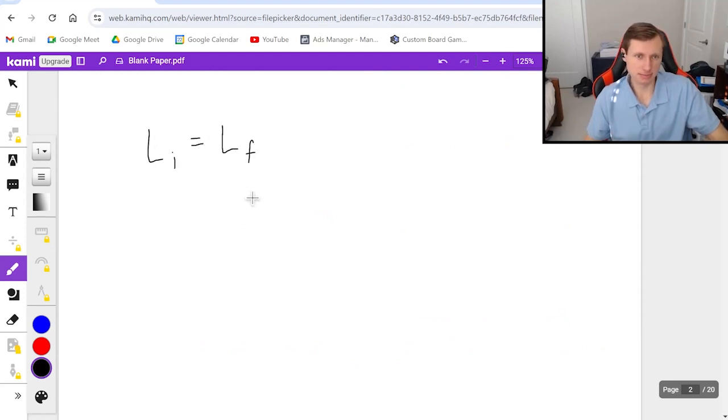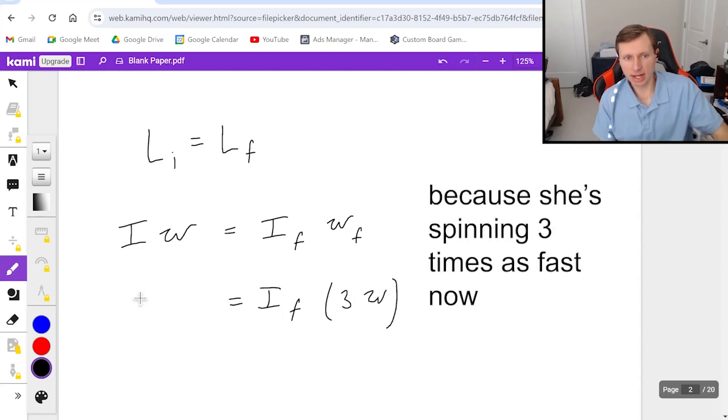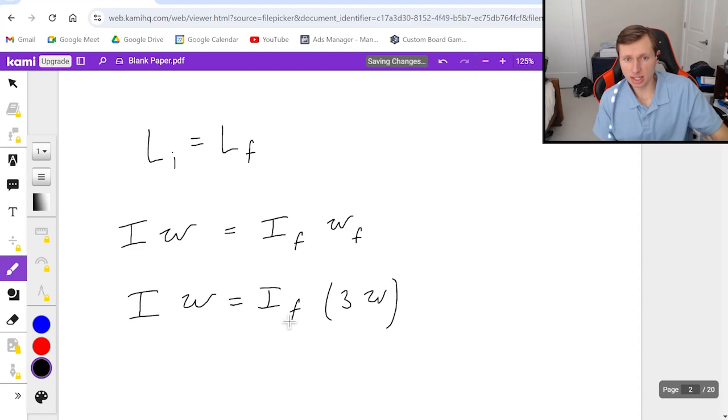L initial equals L final. So anyways her initial angular momentum is just I times omega. And her final is I'll call it I_final times omega final. We know that omega final is three omega.